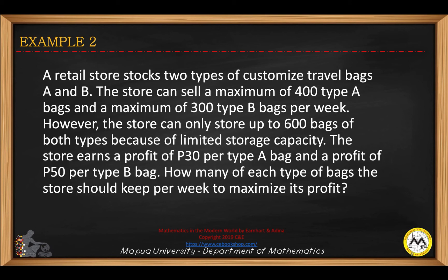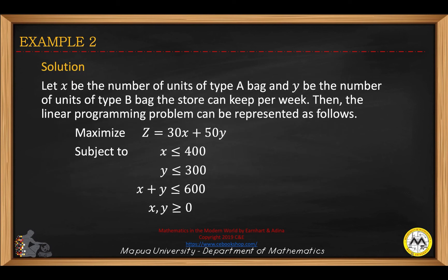A retail store stocks two types of customized travel bags, A and B. The store can sell a maximum of 400 type A bags and a maximum of 300 type B bags per week. However, the store can only store up to 600 bags of both types due to limited storage capacity. The store earns a profit of 30 pesos per type A bag and 50 pesos per type B bag. How many of each type should the store keep per week to maximize profit? We define X as the number of type A bags and Y as the number of type B bags the store keeps per week.